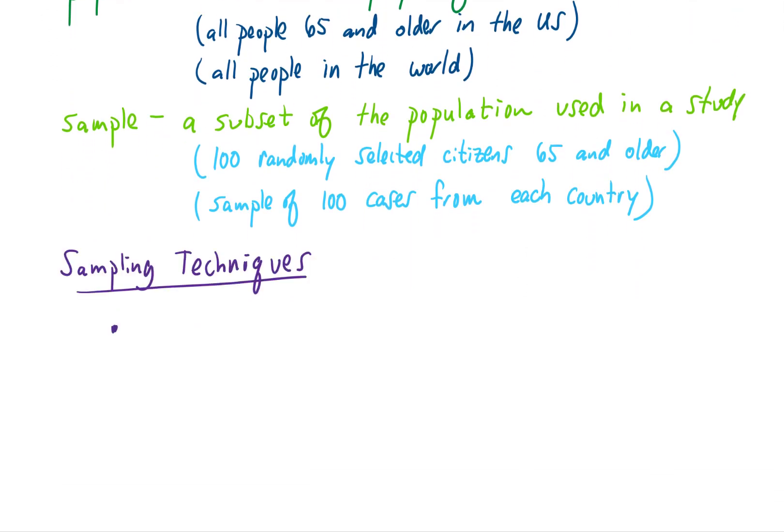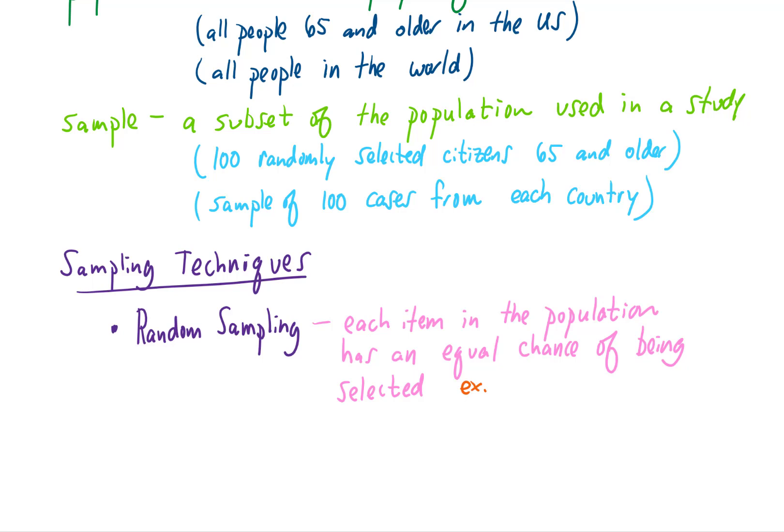Our first technique is just going to be random sampling, sometimes called simple random sampling. In a random sample or a simple random sample, each item in the population has an equal chance of being selected. An example of this would just be putting 10 names into a hat and randomly drawing a name. Or, let's say you have a list of 1,000 students and you want to randomly draw 10 students. What you might do is order those students, give every student a number, and then use a random number generator to choose 10 students.